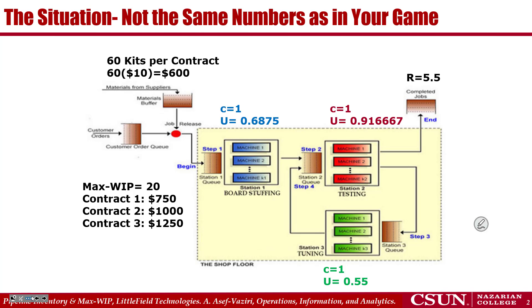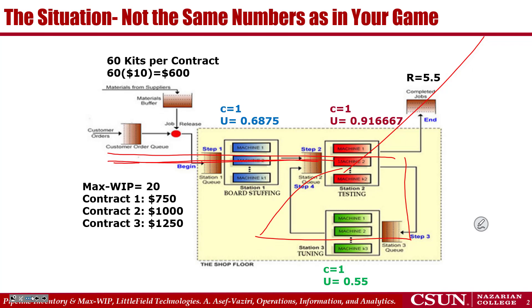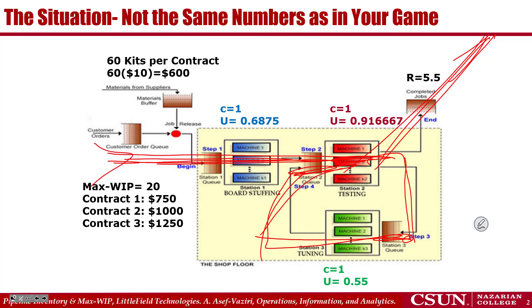The process flow is as follows: orders arrive at Station 1, then go to Station 2, then to Station 3, and then come back to Station 2 before leaving the system. That is the overall flow, and as operations managers our main responsibility is to create a smooth flow.